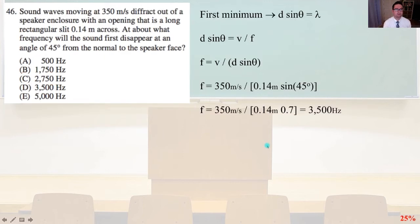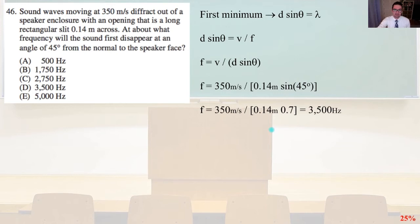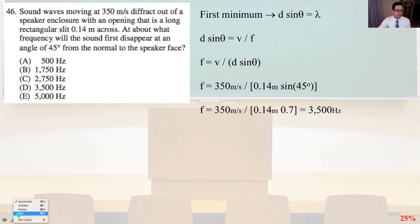Problem 46. Sound waves moving at 350 m/s diffract out of a speaker enclosure with an opening that is a long rectangular slit 0.14 meters across. At what frequency will the sound first disappear at an angle of 45 degrees from the normal? The first minimum is given by d sin θ = λ. So d sin θ = v/f, and f = v / (d sin θ). Plugging in: f = 350 / (0.14 × sin 45°). Since sin 45° ≈ 0.7, f = 3,500 Hz. That is answer D.